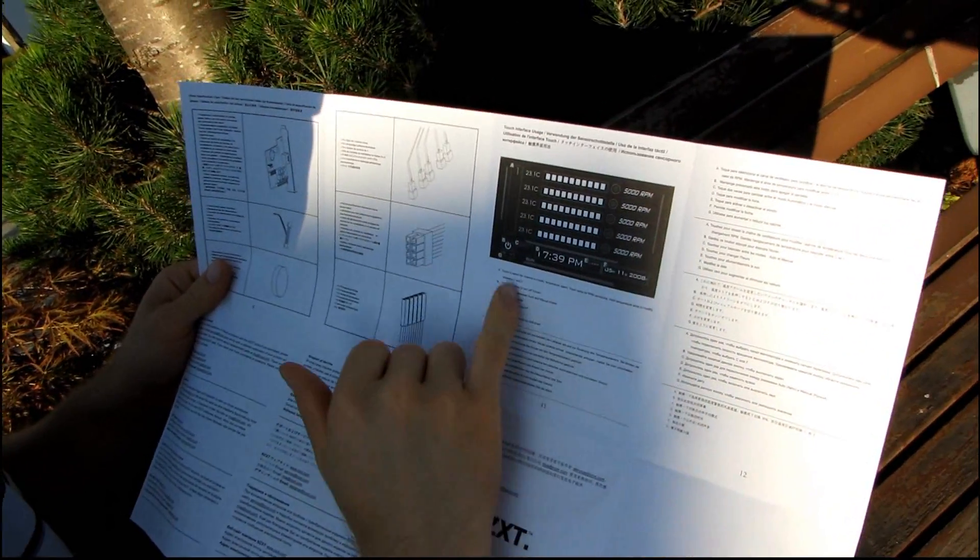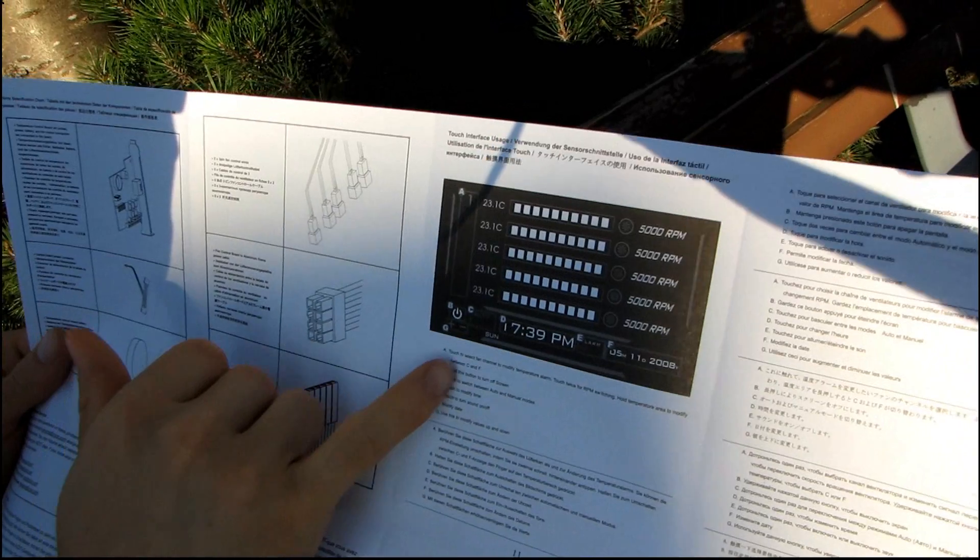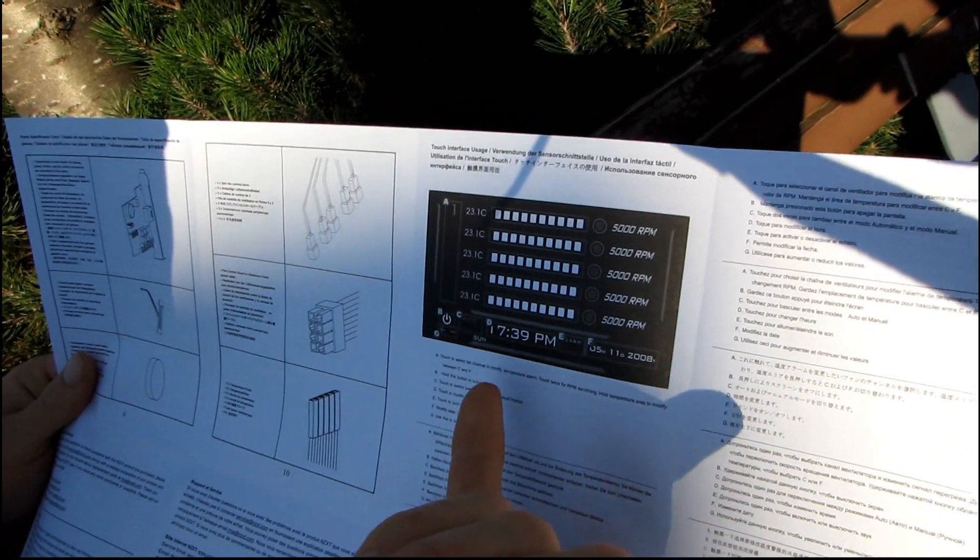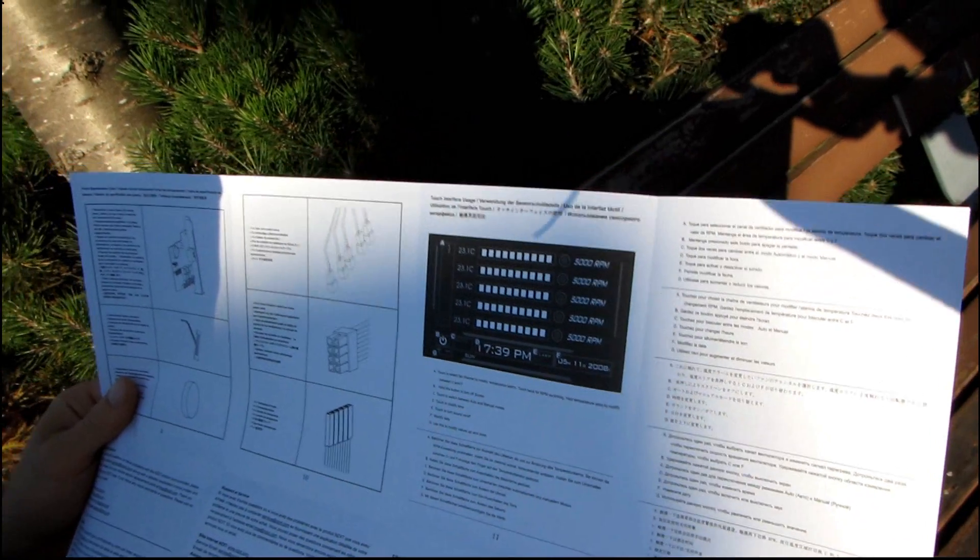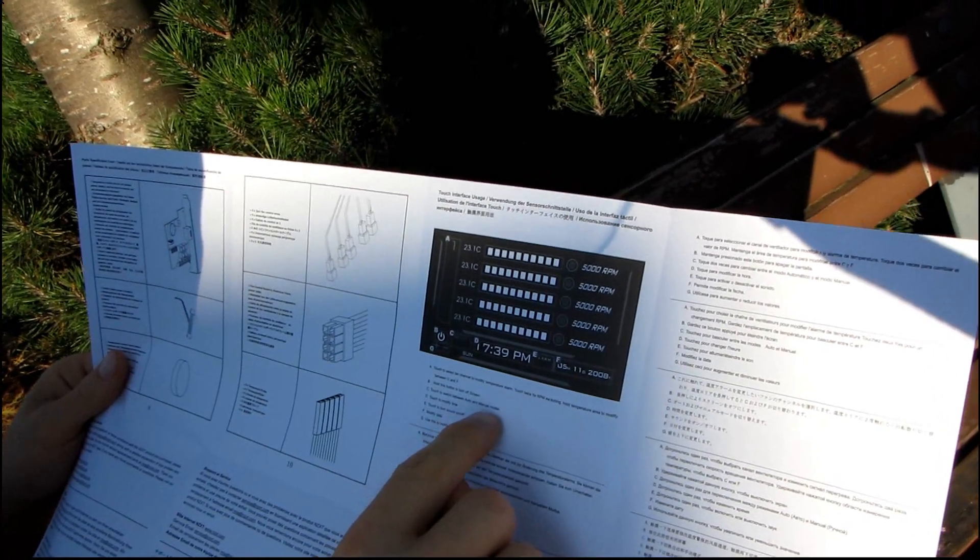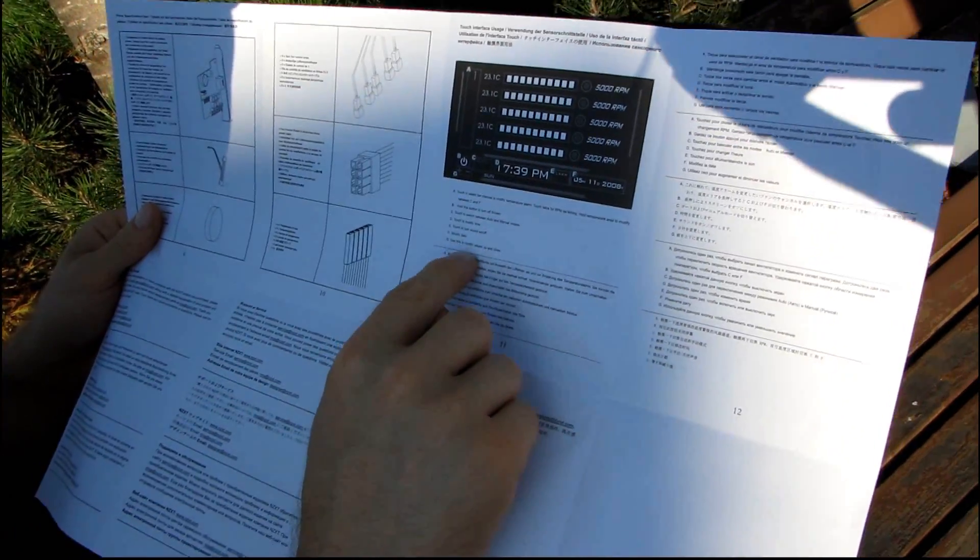So here's the touch screen interface usage, so they show you the places to touch in order to select fan channels, hold this button to turn off the screen, oh you can turn off the screen, that's cool because if you're sleeping or whatever that's pretty handy. Touch the switch to go between auto and manual modes, modify the time.